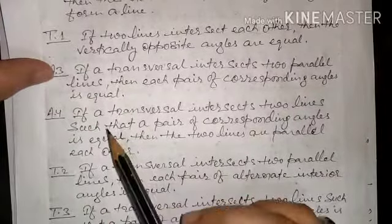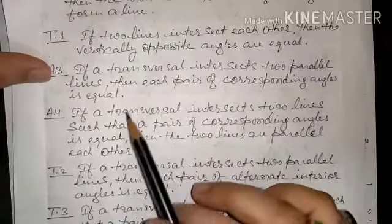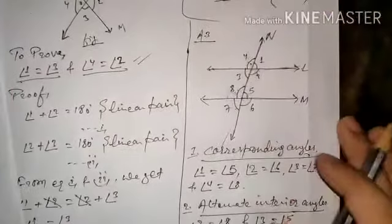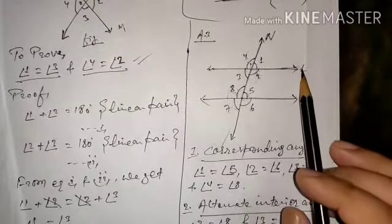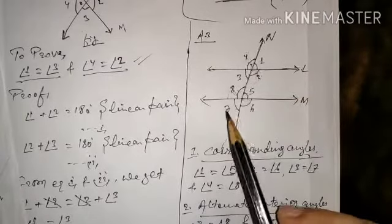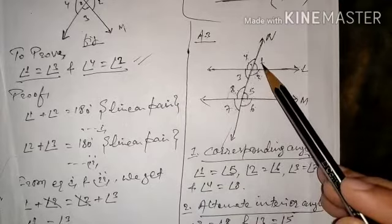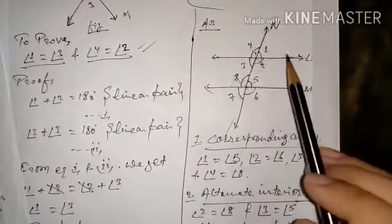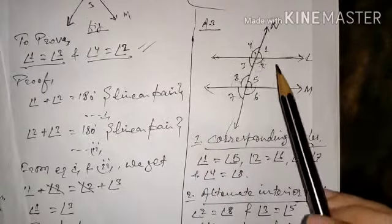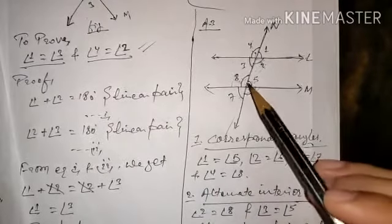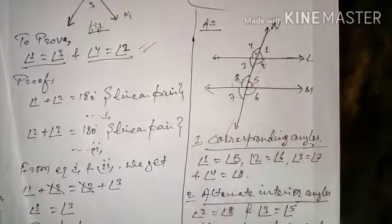Axiom 3: if a transversal intersects two parallel lines, then each pair of corresponding angles is equal. The transversal cuts parallel lines L and M at different points, forming angles 1 through 8. Corresponding angle pairs are: angle 1 and 5, angle 2 and 6, angle 3 and 7, angle 4 and 8. These corresponding angles are equal to each other. You don't need to prove this — it is the corresponding angle axiom.